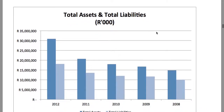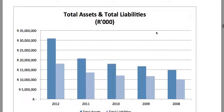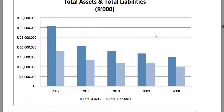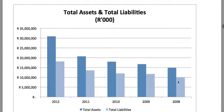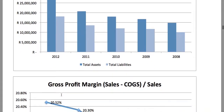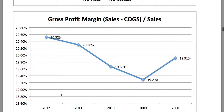Looking at the total assets and total liabilities position of the company, we can see that around about 2012 we are seeing an increase in both. Both the assets and the liabilities of the company have increased.